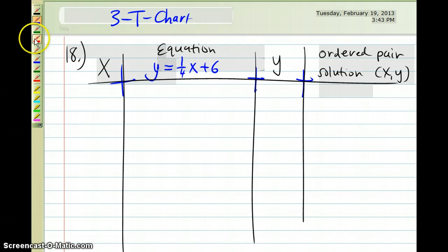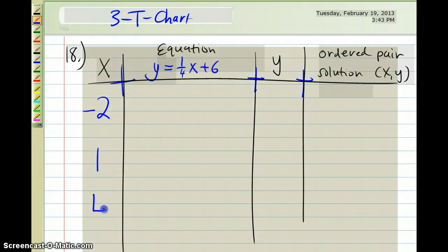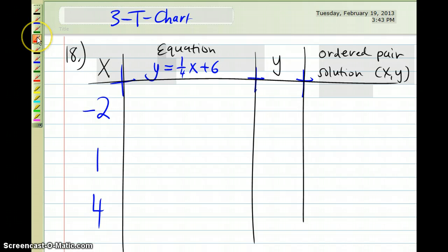And my equation that they gave me is y is equal to 1 fourth times x plus 6. Okay, so I'm going to start with, we have three numbers that they gave me, negative 2, 1, and 4.